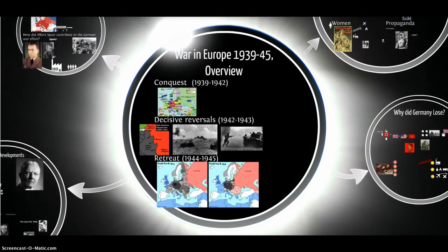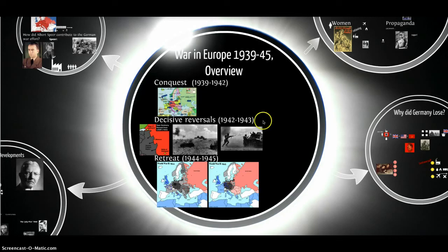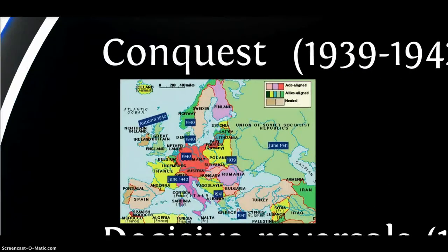Let's look at an overview of the war in Europe between 1939 and 1945 from the German perspective. It can be divided into three phases: a phase of conquest between 1939 and 1942, a phase of decisive reversals between 1942 and 1943, and the final retreat and inevitable defeat between 1944 and 1945.